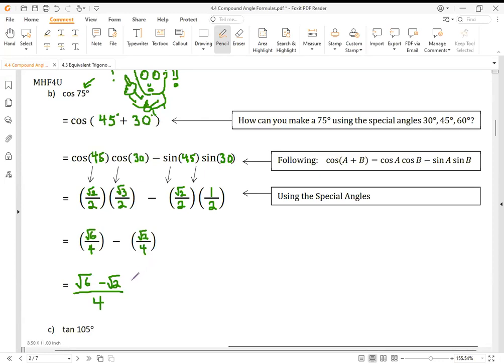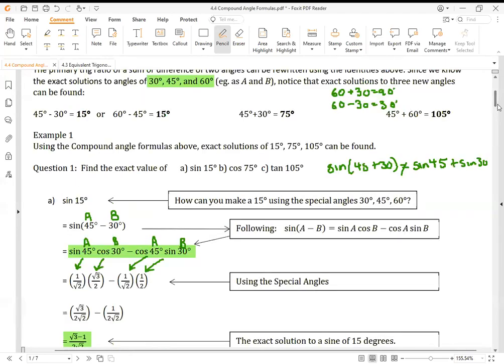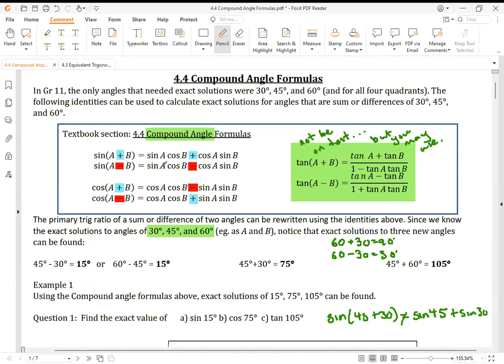That's it. So cos 75, the exact value would be here. Any questions? The next question - I will not give you tangent on the test. But here in class, let's take a look at what it looks like. So tangent of 105.